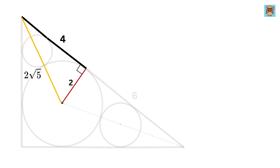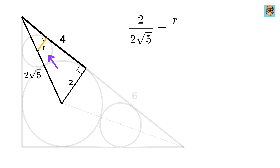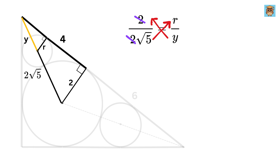Because both the big right triangle and this smaller right triangle share a common angle and both have a right angle, the two triangles are similar by the angle-angle criterion. This means the small triangle is exactly like the big one, just scaled down. So, 2 / (2√5) = r / y. Cancel and rearrange to get y = r√5.